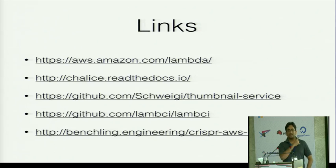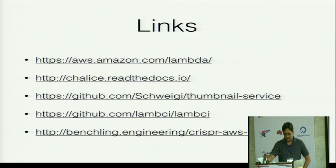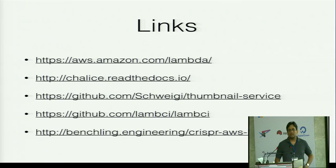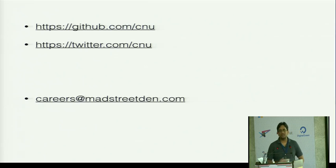These are the links from the talk — I'll be uploading the slides to my talk page. You can search for AWS Lambda, Chalice (which has nice documentation but is experimental), the thumbnail service, LambCI for continuous integration, and the blog post about the genome editing Lambda project. My GitHub and Twitter account are also shared. If you're interested in joining Matchstraden, please email careers at matchstraden.com. Any questions?